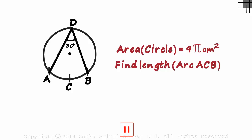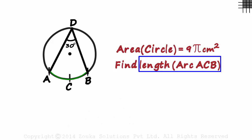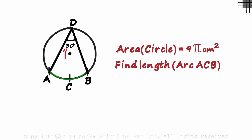Here's a typical exam problem. We are given that angle ADB measures 30 degrees and the area of the circle is 9π. We are asked to find the length of arc ACB. To find the arc length, the first thing required is its central angle. We can draw two radii and call the central angle theta.